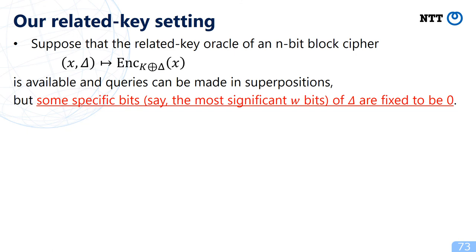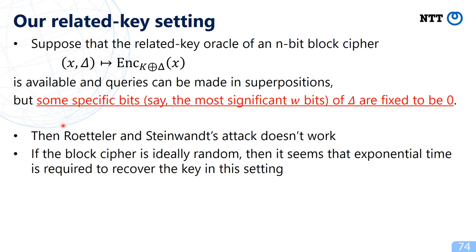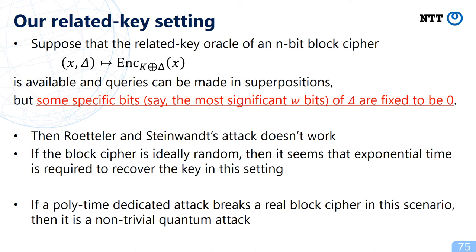In our related-key setting, some specific bits — say the most significant w bits — of Δ are fixed to zero. Then Roetteler and Steinwandt's attack does not work because some bits of Δ are always fixed. If the block cipher is truly random, exponential time seems required to recover the key, so a polynomial time dedicated attack on a real cipher in this setting would be non-trivial.